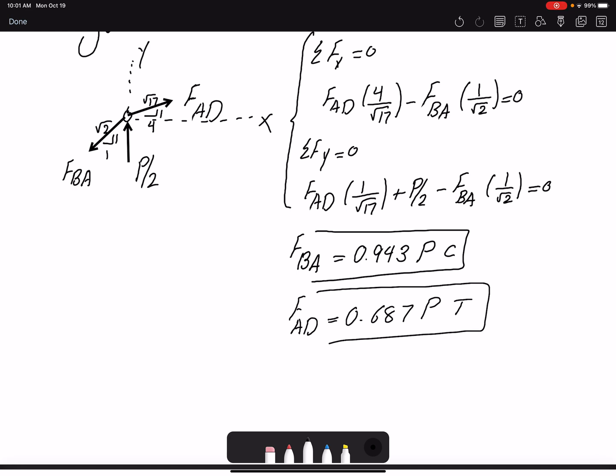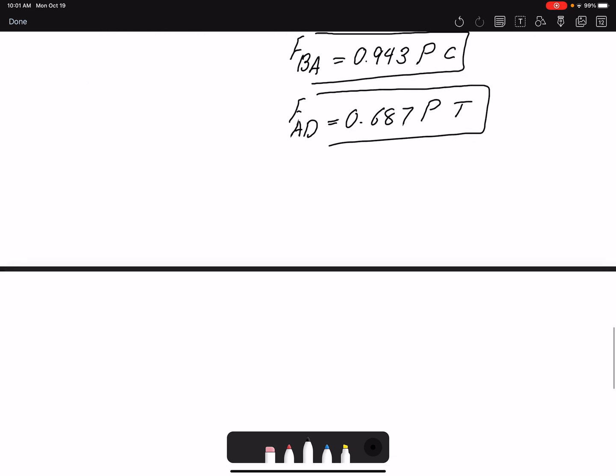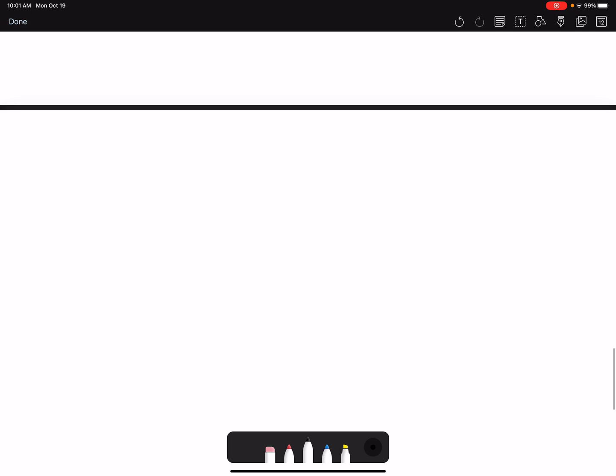We found two forces based on the value for P. Now we're going to analyze joint D to find the other unknowns. At joint D we have the force P being applied. We have FAD, which is in tension, and we already found its value. So we know the value and we know the direction.